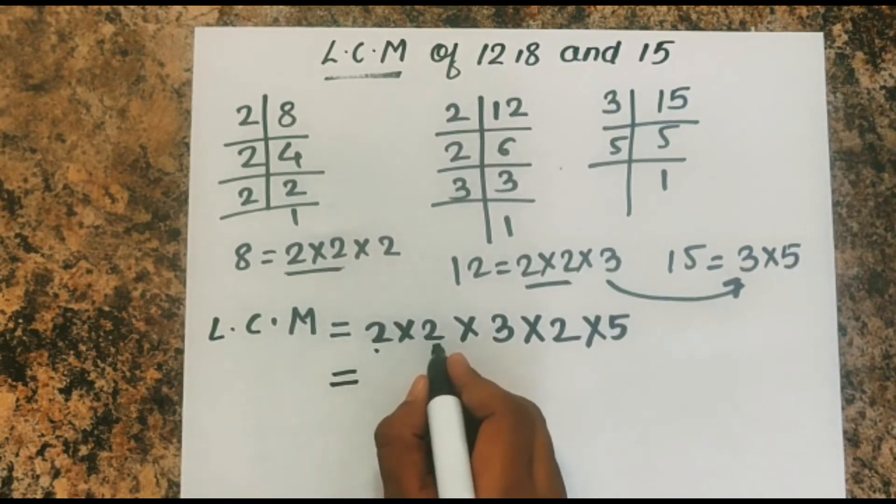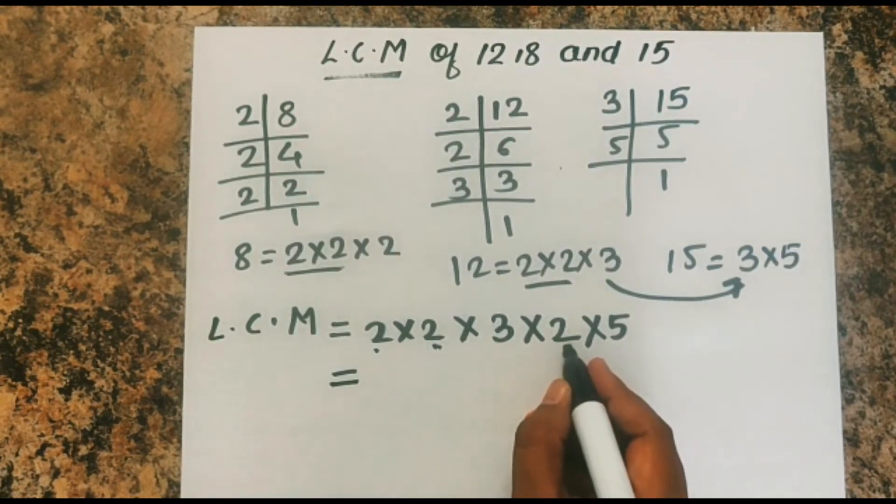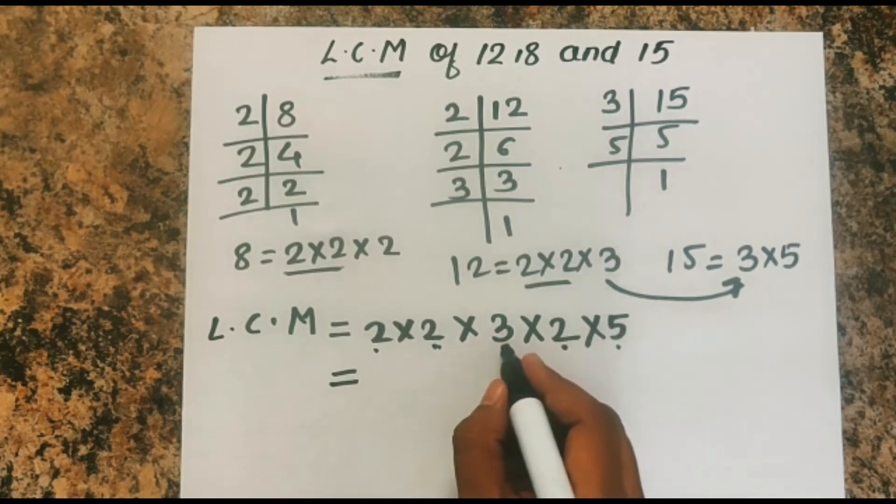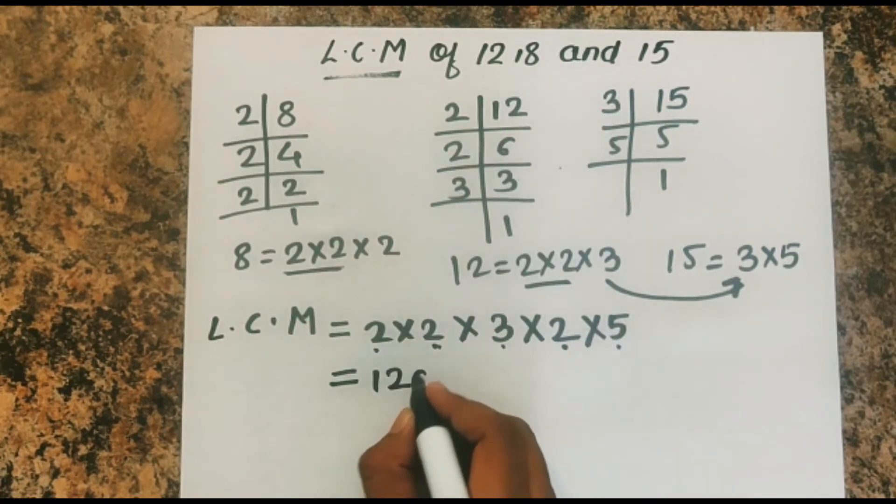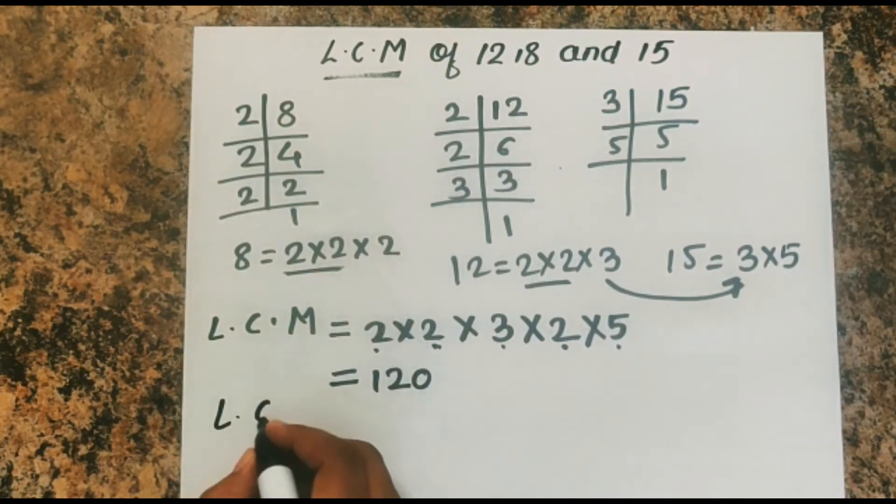So it becomes 2 into 2 is 4, 4 into 2 is 8, 8 into 5 is 40, and 40 into 3 is 120. So LCM is 120.